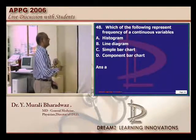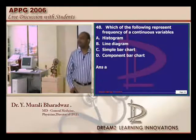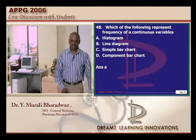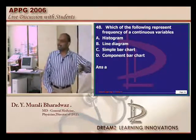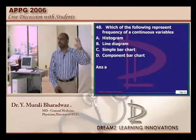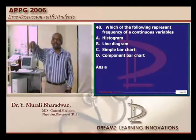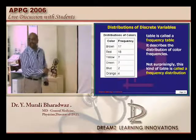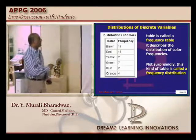Regarding continuous variables — which diagram represents their frequency? First we need to know what is continuous and what is a discrete variable. Male or female: no one can be in the middle of the two. That kind of all-or-none variable is called a discrete variable. Whereas height, weight, and color can have many variations — someone can be 30 kg, 32 kg, 34 kg, and so on. Weight, height, and body complexion are all examples of continuous variables. For discrete variables, you use a bar diagram to represent frequencies.